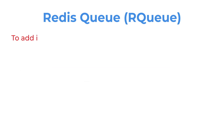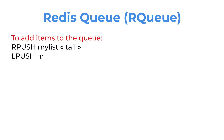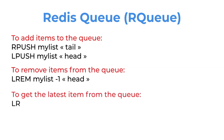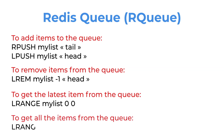Here are some examples of commands: to add items to the queue, to remove items from the queue, to get the latest item from the queue, and to get all the items from the queue.